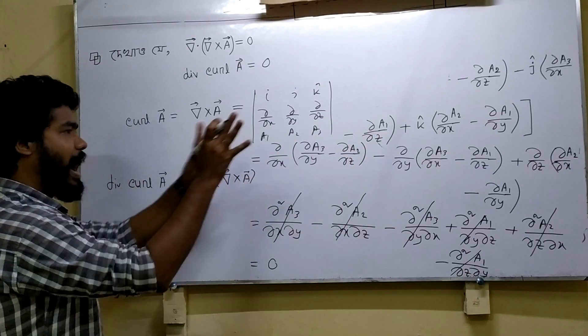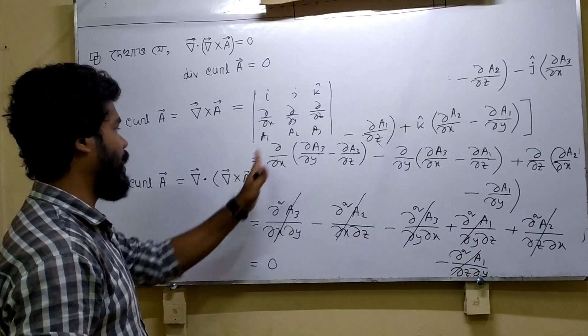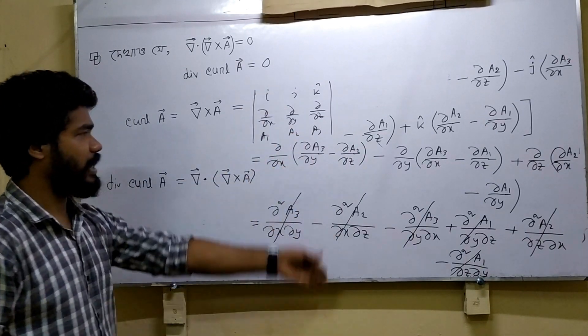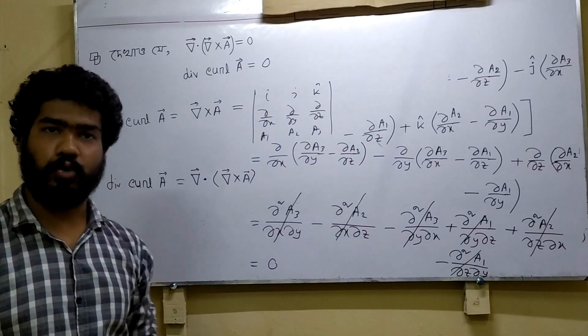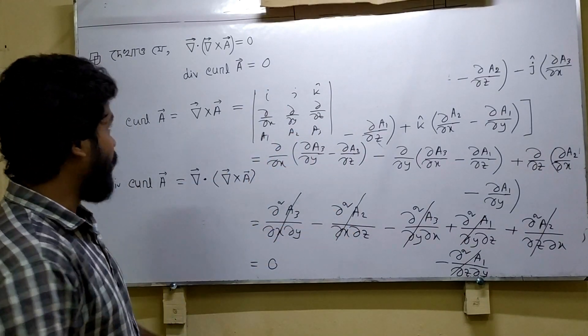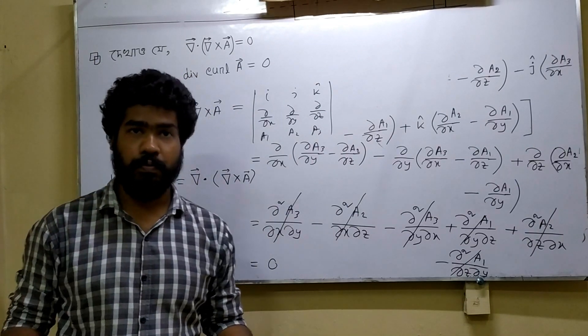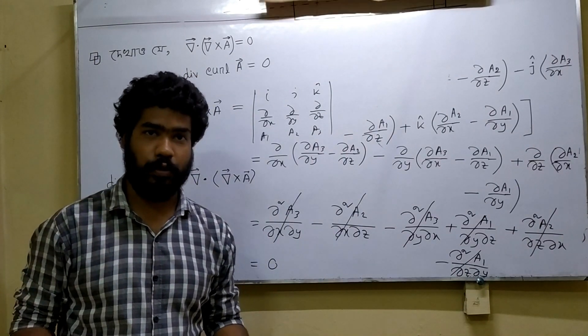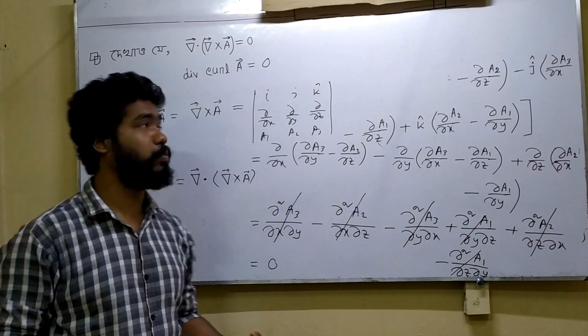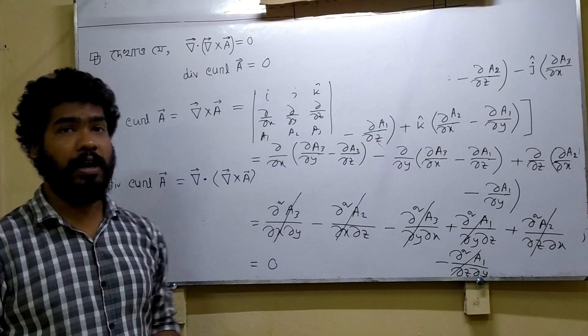Let's confirm this result. So divergence curl A equals nabla dot (nabla cross A) equals 0. This completes the proof of the vector calculus identity. Let's go ahead and verify this is correct.